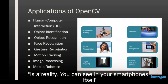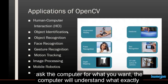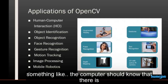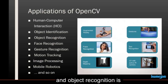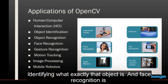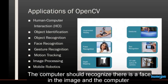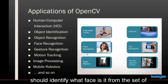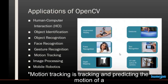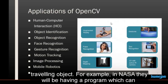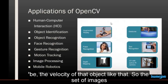You can see this in your smartphones. Human-computer interaction means you can go to a computer and ask for what you want, and the computer will understand what you are trying to convey. Object identification means the computer should know there is a valid object to look out for in the scene or picture. Object recognition is identifying what exactly that object is. Face recognition works similarly — the computer recognizes that there is a face in the image and identifies who that person is from its machine-learned data. Motion tracking involves tracking and predicting the motion of a traveling object — for example, NASA uses programs to identify the path of a traveling meteor.